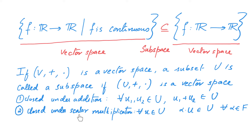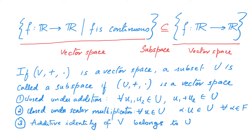Now notice that U is closed under scalar multiplication. Therefore, if you take a U in capital U, then minus 1 times U also belongs to capital U. But we saw that minus 1 times U is the additive inverse of U. Thus U contains additive inverses of all elements of U. Therefore, the only property that remains to be checked is that U has an additive identity — in other words, the additive identity of V belongs to U. To repeat: a subset U of a vector space forms a vector space under the inherited addition and scalar multiplication if and only if it is closed under addition, closed under scalar multiplication, and contains the additive identity of V.